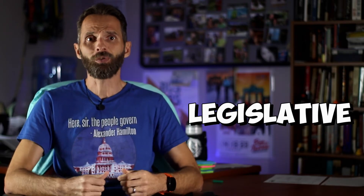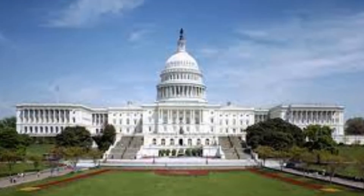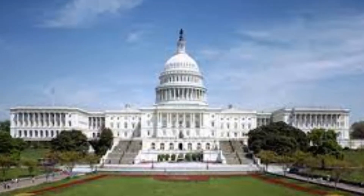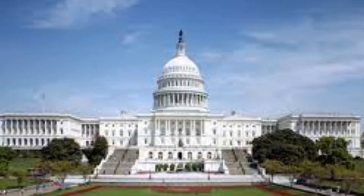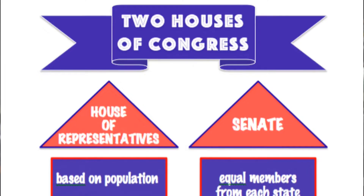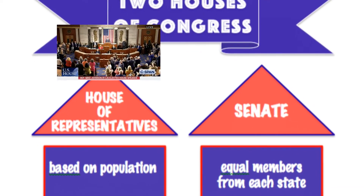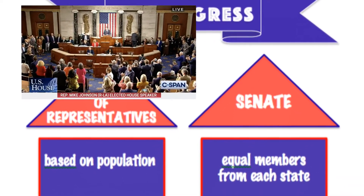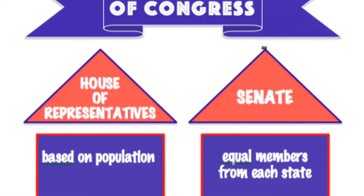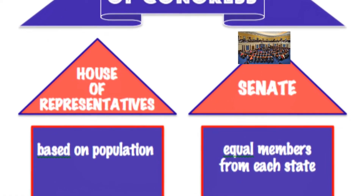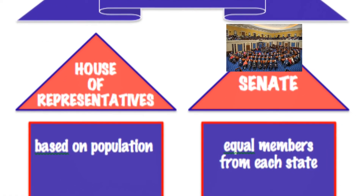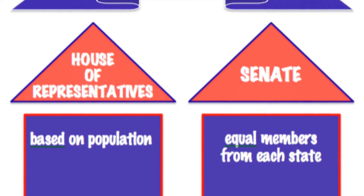First we have the legislative branch, which is responsible for making laws. It is composed of Congress, which is divided into two chambers: the House of Representatives and the Senate. The House of Representatives represents the people, with the number of representatives from each state based on its population. The Senate represents the states equally, with two senators from each state.